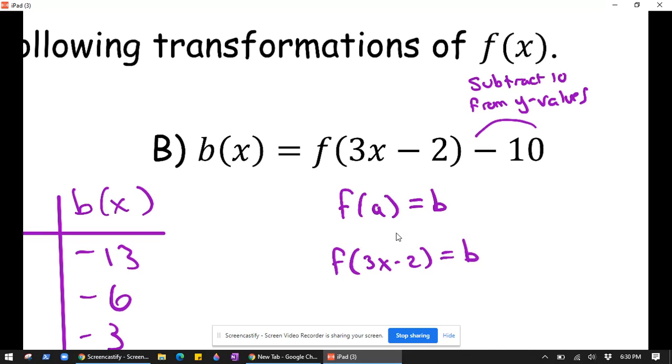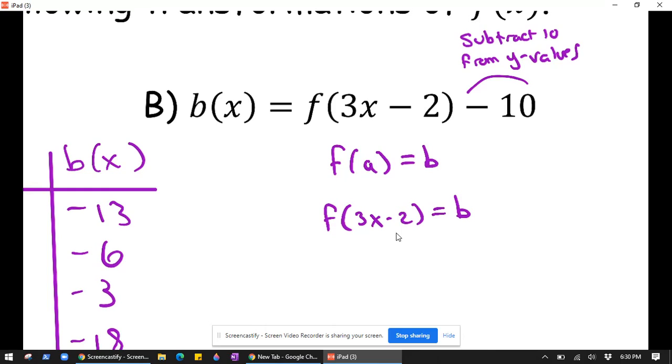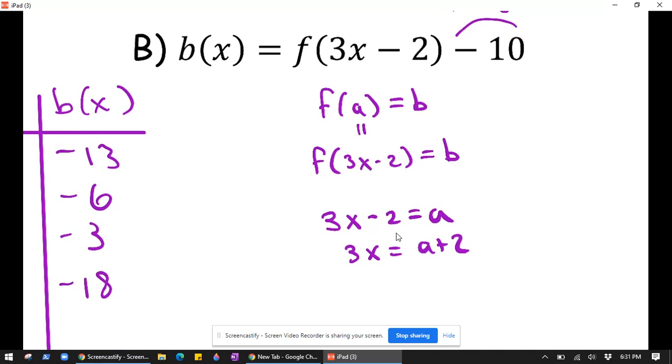And so what that means is we need 3x minus 2 to equal a. So 3x minus 2 equals a would mean that 3x equals a plus 2, and then we divide by 3.